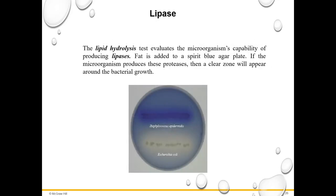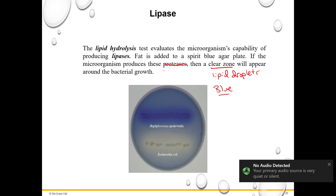The lipid hydrolysis test evaluates the microorganism's capability of producing lipases. Fat is added to spirit blue agar; if the microorganism produces lipases, a clear zone will appear around the bacterial growth. In addition to clearing, you might be able to see lipid droplets, and it might be blue in color. For example, Staphylococcus epidermidis is positive while E. coli is negative. Note: the slide correction here is that the label should say 'lipases.'